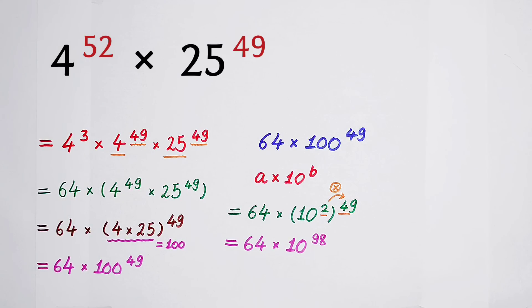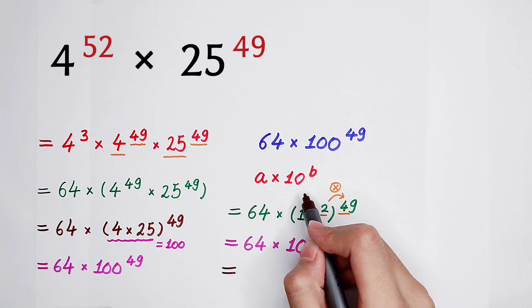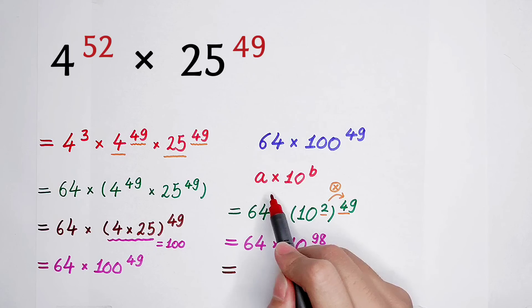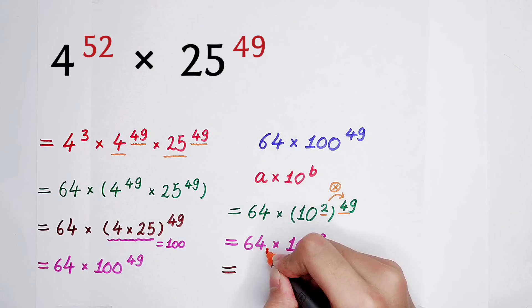And then the final answer, we have to write it as A times 10 to the power B, this form. And this A, it has to be greater or equal to 1, and it has also to be smaller than 10. But here, the 64, it is greater than 10. So, I have to write it as,